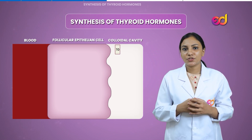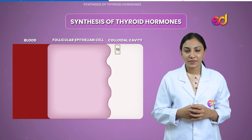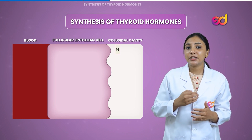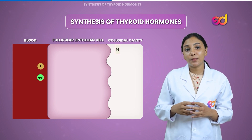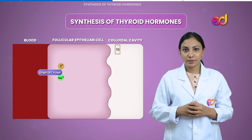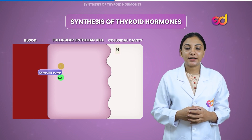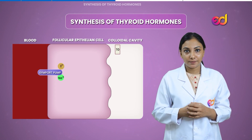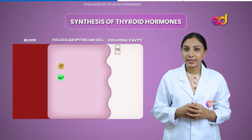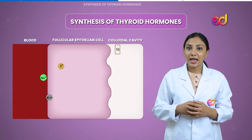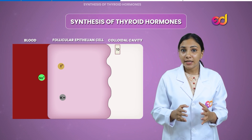Iodine is very essential for synthesizing thyroid hormones. Iodide in the bloodstream is transported to the follicular cells along with sodium via the sodium-iodide symport pump. Since it is a symport pump, both sodium and iodide are transported in the same direction. However, we only need iodide, so once iodide enters the follicular cells, sodium is moved back out in exchange for potassium.